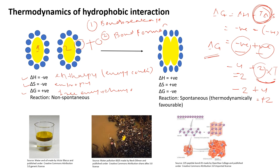When both ΔH and ΔS are negative, the reaction is favorable only if T is less than ΔH/ΔS, giving a negative ΔG. A negative ΔG means the reaction is thermodynamically favorable or spontaneous; a positive ΔG means it is non-spontaneous. If both ΔH and ΔS are positive, then the reaction is spontaneous only when T is greater than ΔH/ΔS. We will learn this in greater depth when we study the thermodynamics chapter.